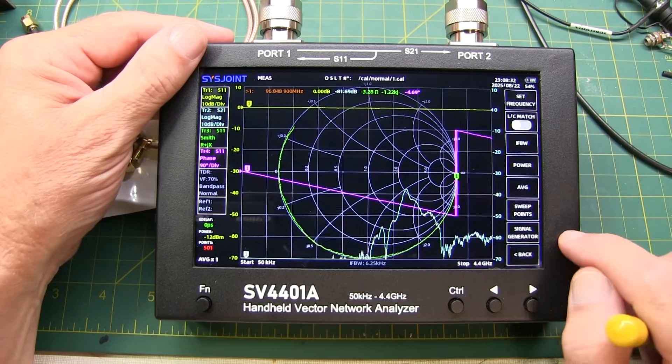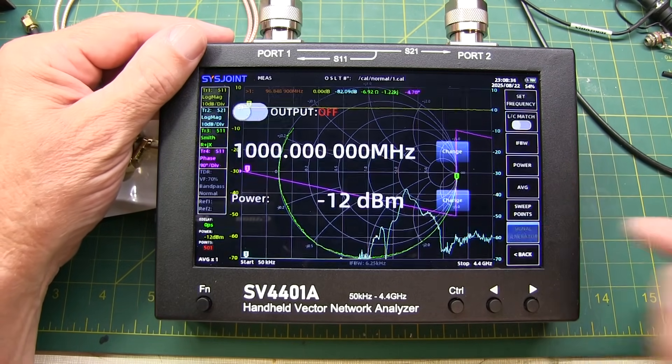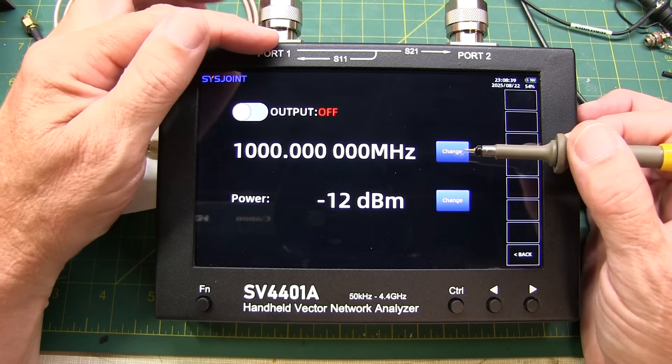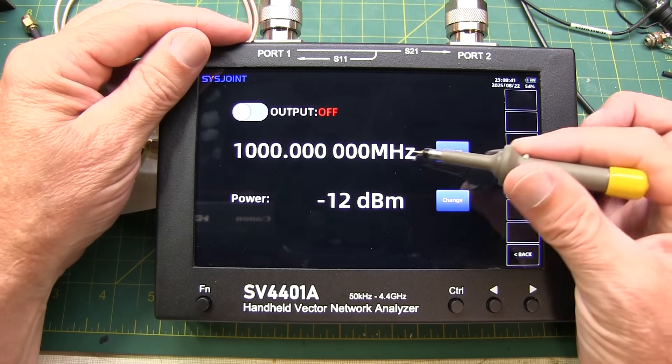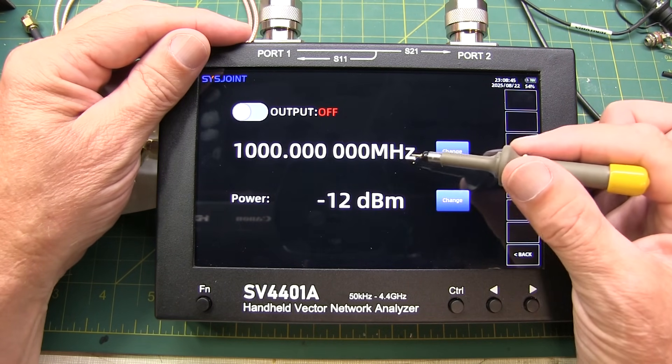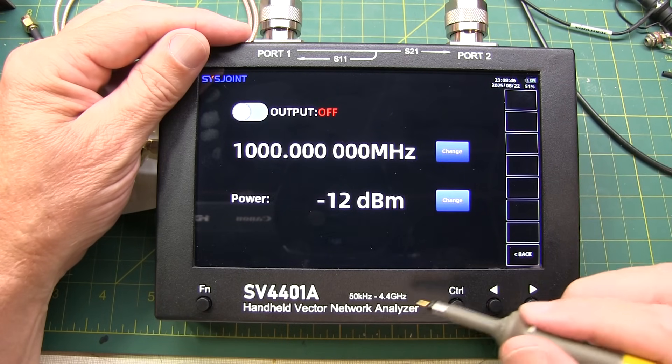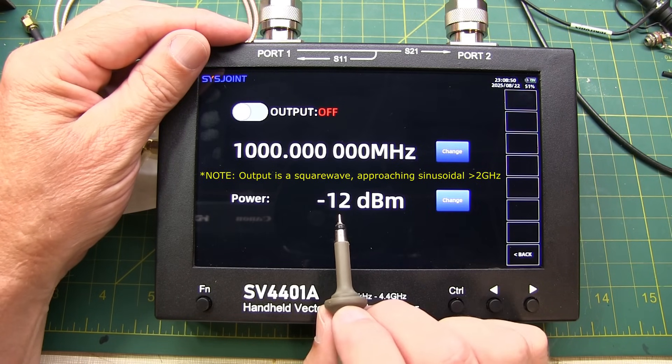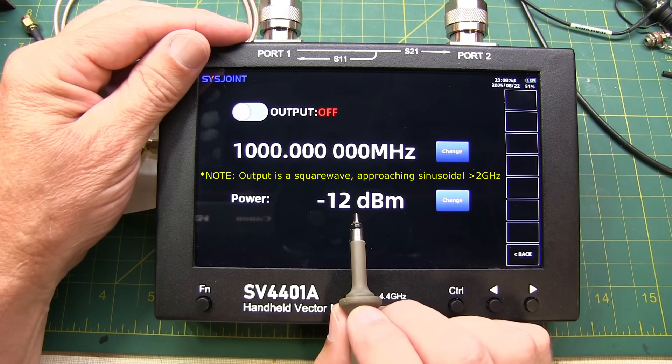And finally under the stimulus menu you can also go and set the signal generator mode. Now in this mode you can actually set the port 1 to be an RF signal source, essentially from 50 kHz to 4.4 GHz, the frequency range of the instrument, and power range again from about minus 42 dBm up to minus 12 dBm.